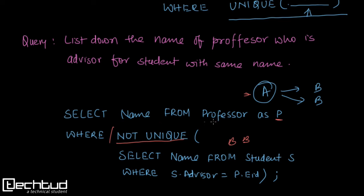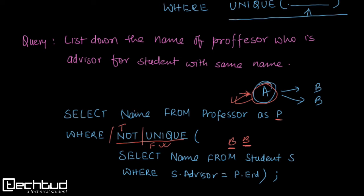Let's understand it again. Say for the first record from professor we have professor A. For this A, we will find out the names of students guided by professor A, using S.advisor = P.EID. Now if we have two students with the same name, the UNIQUE function will return false. But we have NOT here, so not-false becomes true. The predicate after WHERE is true, so professor A will be selected. That's how it works.